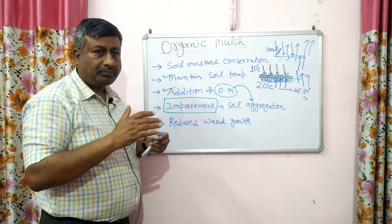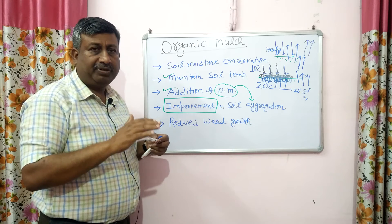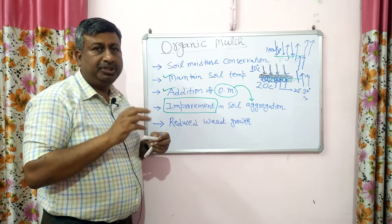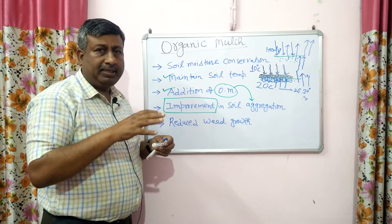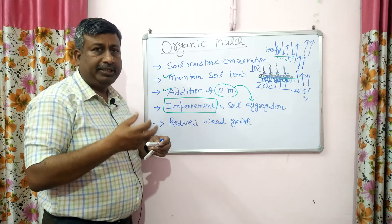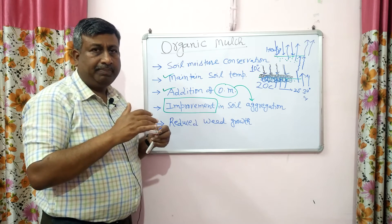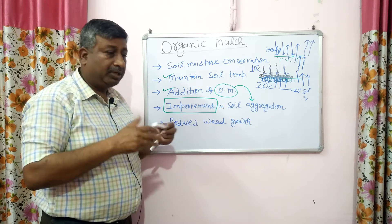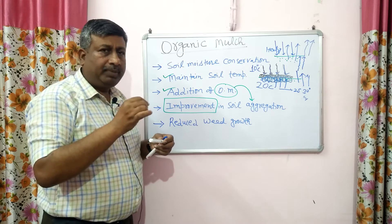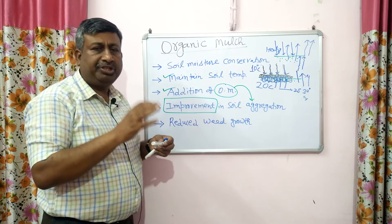When organic residues are used, after decomposition they contribute organic matter, and the effect of organic matter is improvement in soil aggregation. In clay soil, micro-pores are more, so aeration is very poor and water holding capacity is very high. Water remains in soil for a longer period, which is not a good situation — crops suffer from water excess. After irrigation or rainfall, this is the problem in clay, heavy-textured soils because of high micro-porosity and poor aeration.